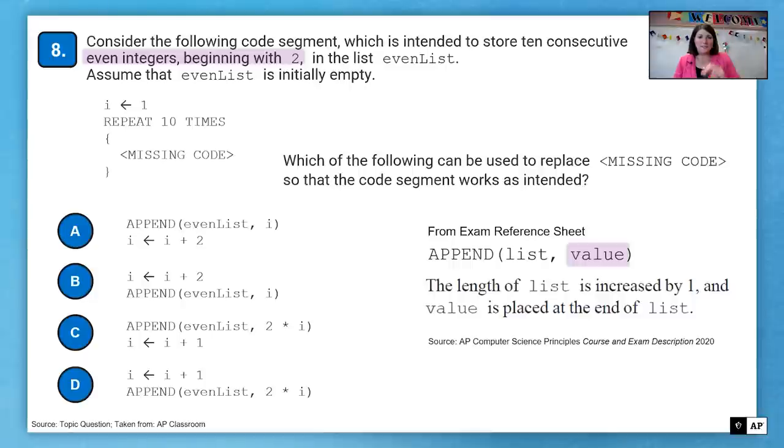We need to append even integers beginning at two. So that's really the key to this question is how can we get all the even integers beginning at two? Because the append seems to be correct in all the questions, just slightly written a little different. And so that value is what's different in that append. So if I starts at one, then I really don't want to append I because I and the first in A would be one.